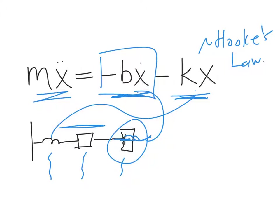It's important to note that the damping here we've assumed is proportional to velocity. It doesn't have to be — you may recall from Chapter 2 that this represents a linear drag term. You could have quadratic drag or more complicated drag terms. But for simplicity, to introduce the basic idea of damping in an oscillator, we're going to use a linear drag term.